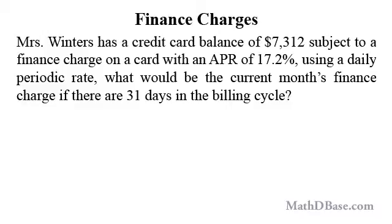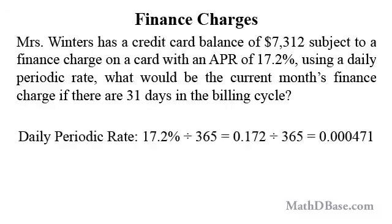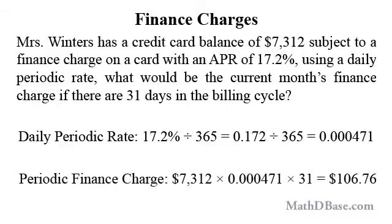what would be the current month's finance charge if there are 31 days in the billing cycle? The daily periodic rate on her card is the APR divided by 365, or 17.2% divided by 365, which is 0.172 divided by 365, or approximately 0.000471.